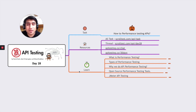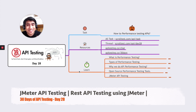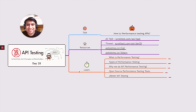Hey guys, welcome to Testing Academy. My name is Pramod and welcome to the 30 Days API Testing Challenge. This is Day 28 and today's topic is to use a tool called JMeter. We are going to learn how to perform your first JMeter API testing, or REST API testing with JMeter. I hope you are excited, so let's get started.